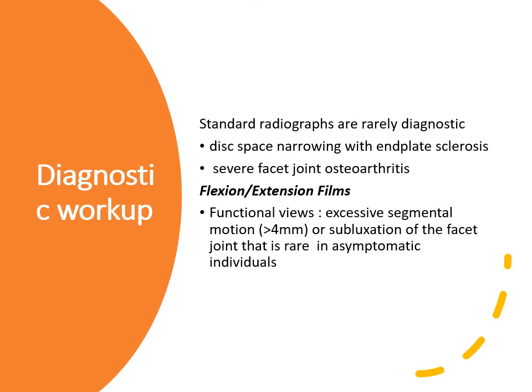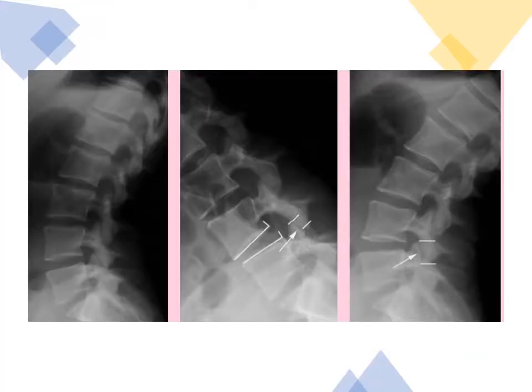Plain X-ray will not be very helpful in studying the lumbar spine, with only one exception: the functional view, which is the lateral flexion and extension films. These may elicit subluxation or segmental motion and indicate instability. For example, in this case, when you look at the plain film it appears almost normal, but with flexion and extension views we see subluxation of the facet joint and abnormal movement of the vertebrae, which indicates some sort of instability in the spine.